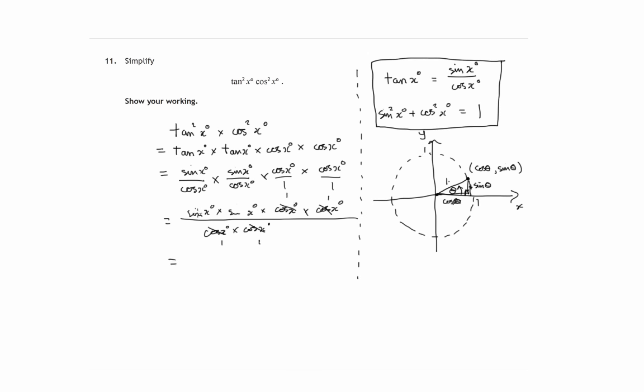And what we're left with is sin x times sin x over one, which is just sin x times sin x. And the shorthand way of writing sin x times sin x is sin squared x. So we've simplified tan squared x times cos squared x.